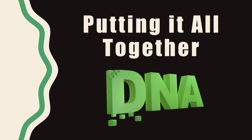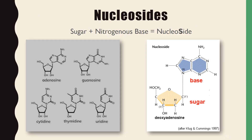Now that we have all the building blocks, let's talk about putting them together for DNA. We start by combining two building blocks: a sugar and a nitrogenous base — which can be a purine or pyrimidine, including adenine, guanine, cytosine, thymine, or uracil. When these two are combined, a nucleoside is formed. To remember this, think: nucleoside with an S contains the sugar and nitrogen base.